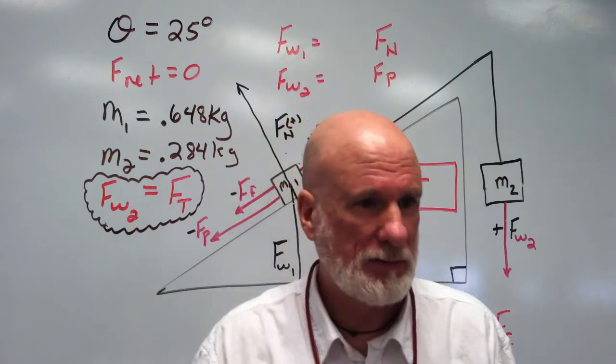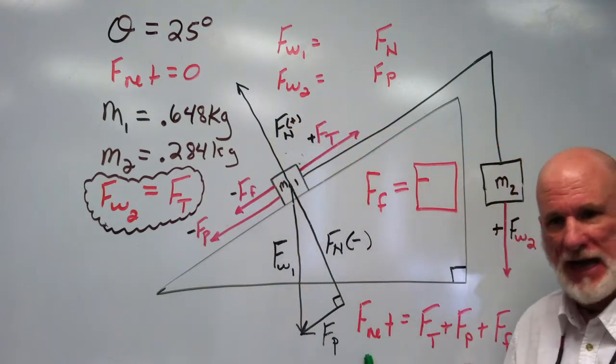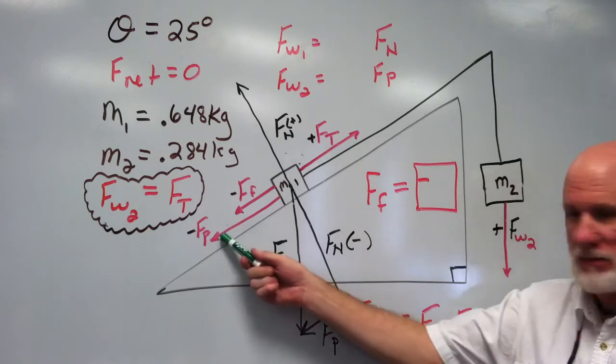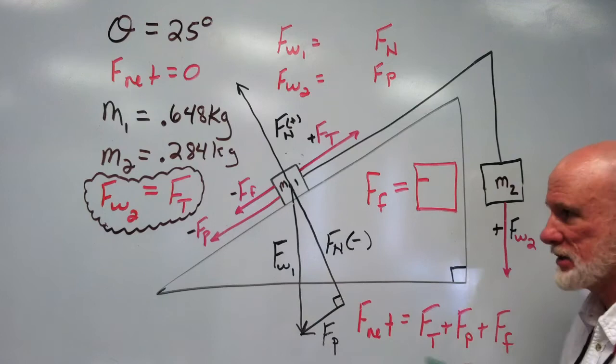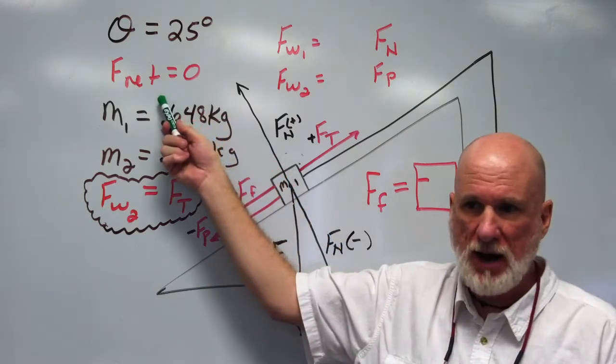So then this is true. Fnet equals this tension plus the parallel force plus the friction. That equals zero. That equals zero. The net force is zero. I measured with this.